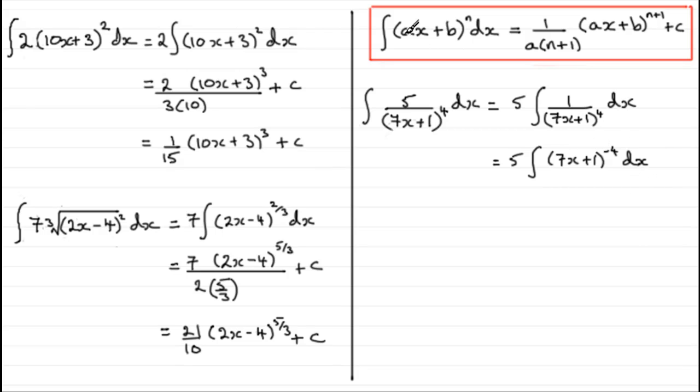I've got that in this format again. So away we go. We're just going to have then 5 times (7x + 1) to the power. If we add 1 to the power of -4, we get -3. And then we divide by the new power and the number here, the a value. So we've got 7 and that -3. And then we've got the constant of integration.